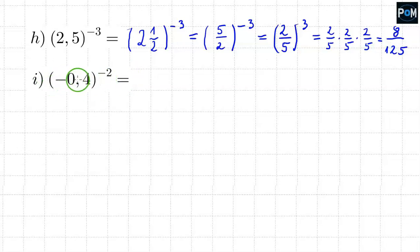Now, example i. Again, we have a decimal fraction, so we convert it into a common fraction. We keep copying this minus sign. Minus 0.4 equals minus 4 over 10. Then we raise it to the power of negative 2. Before we start working on it, it would be good to simplify this fraction. When we reduce it by 2, we end up with 2 fifths here. And this is to the power of negative 2.